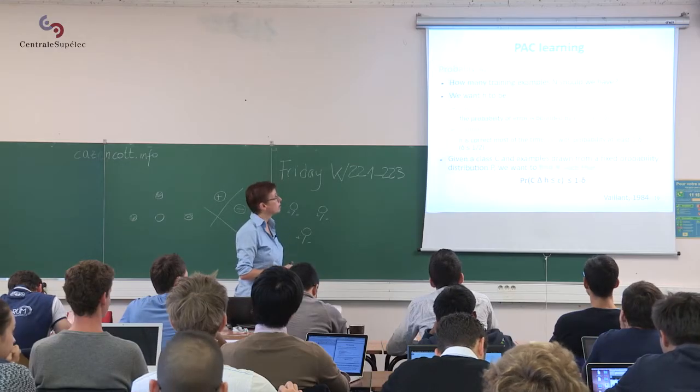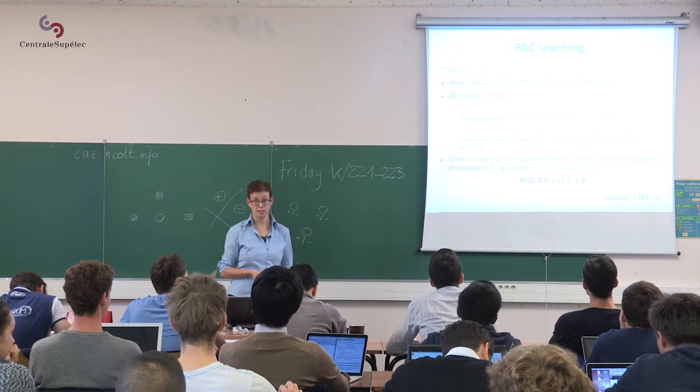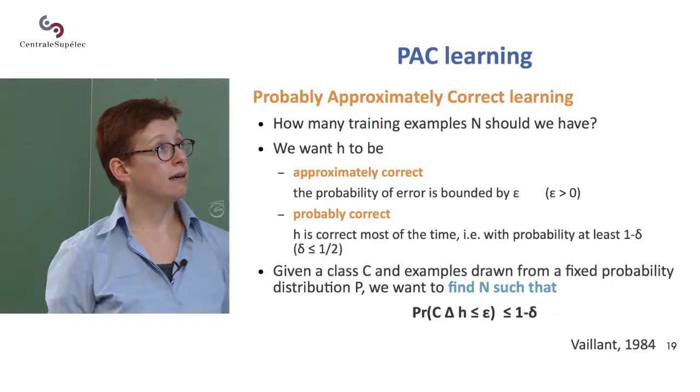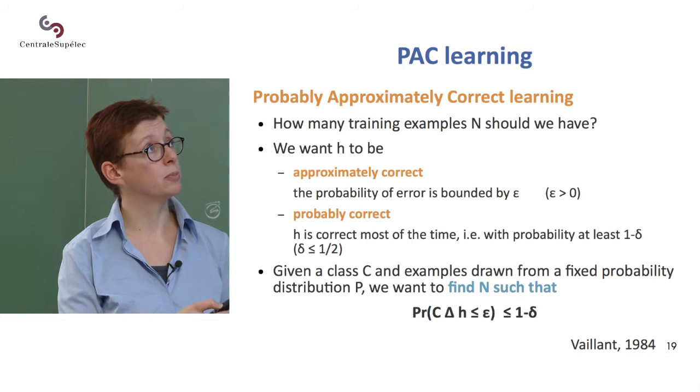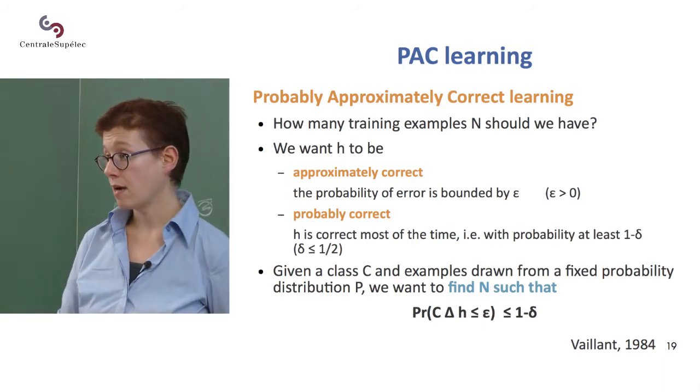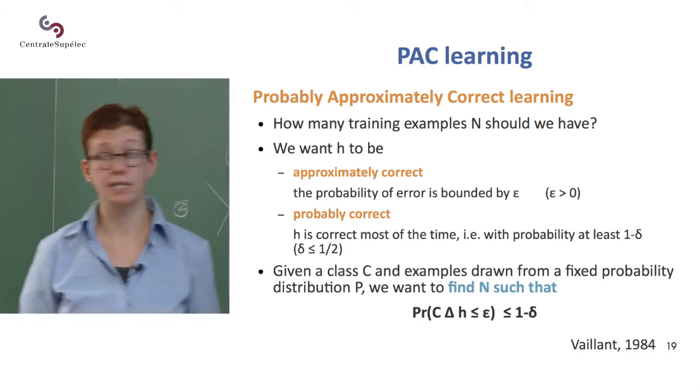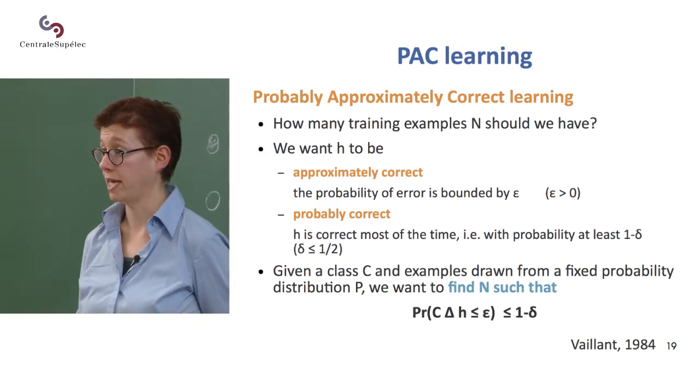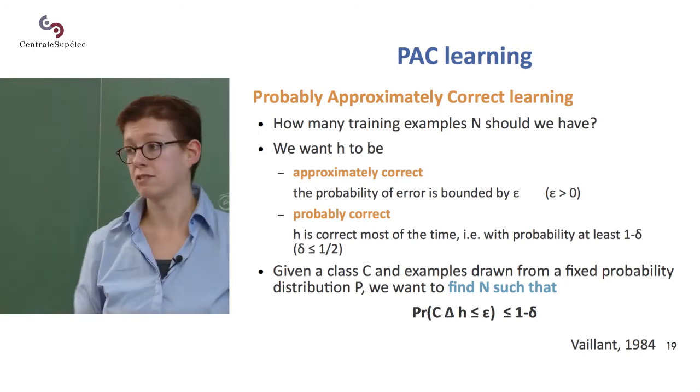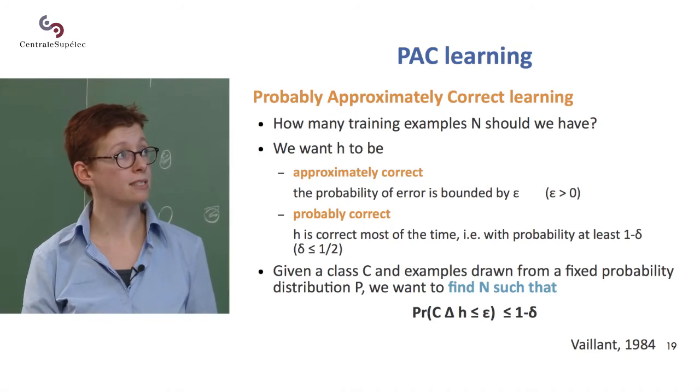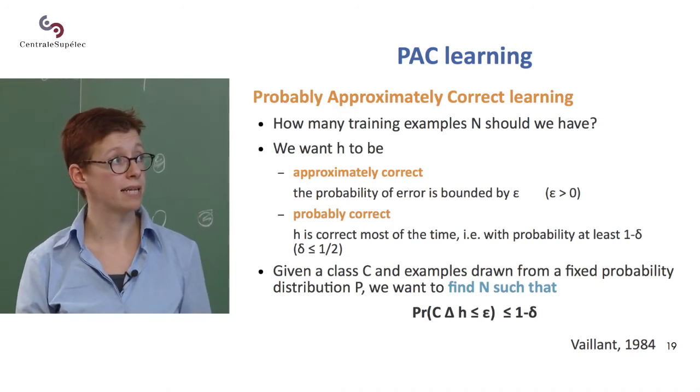The concept of probably approximately correct learning is first that we want the thing we learn to be approximately correct. Approximately correct means that we bound the number of errors we make or rather the probability of error. The probability of making an error is bounded by epsilon.